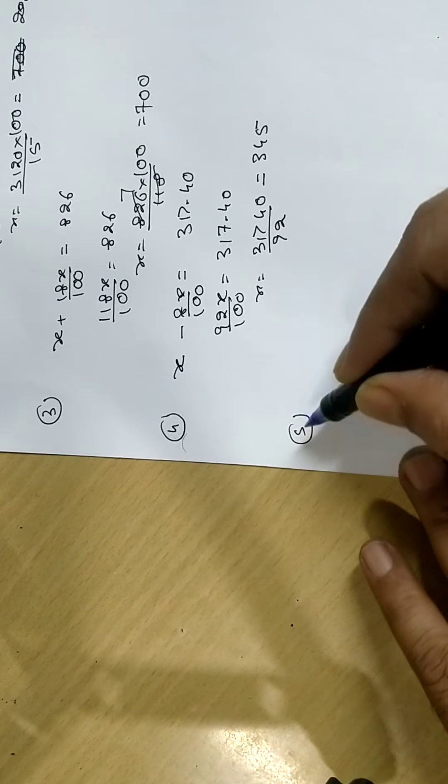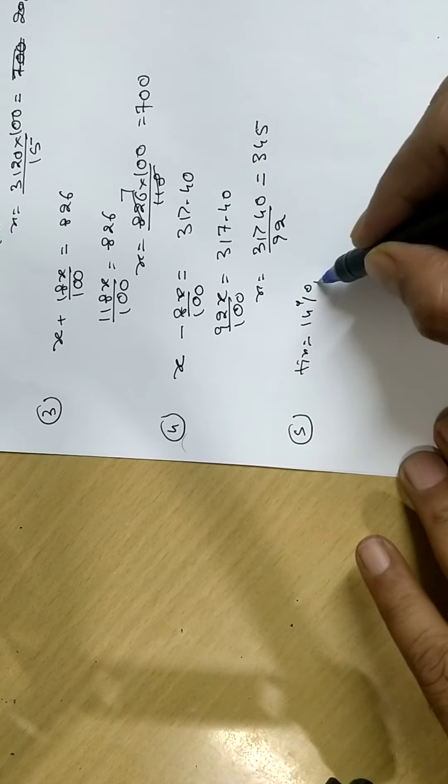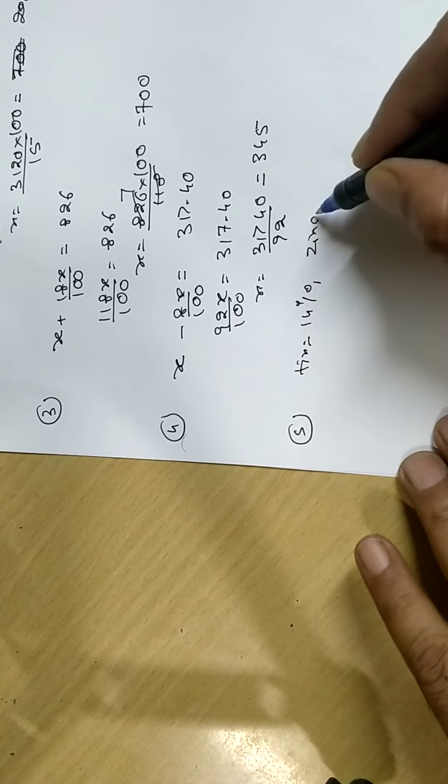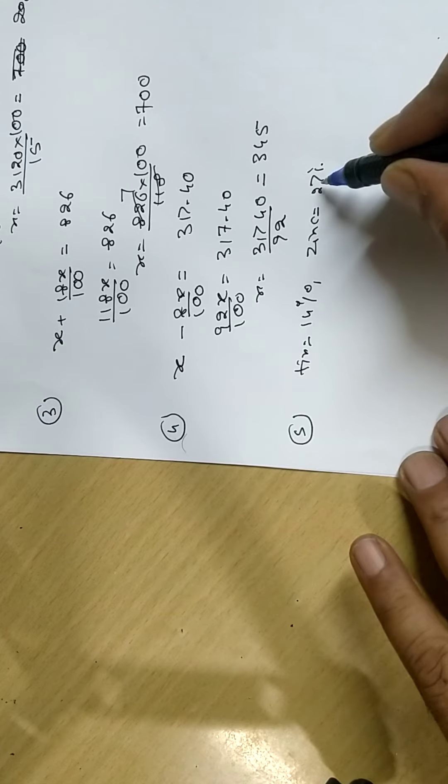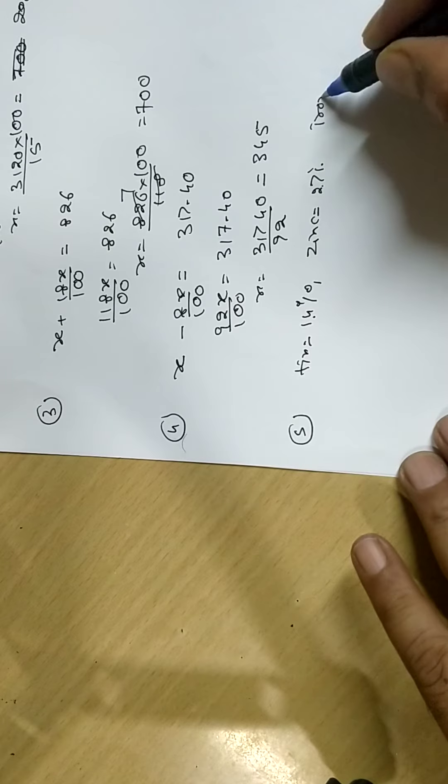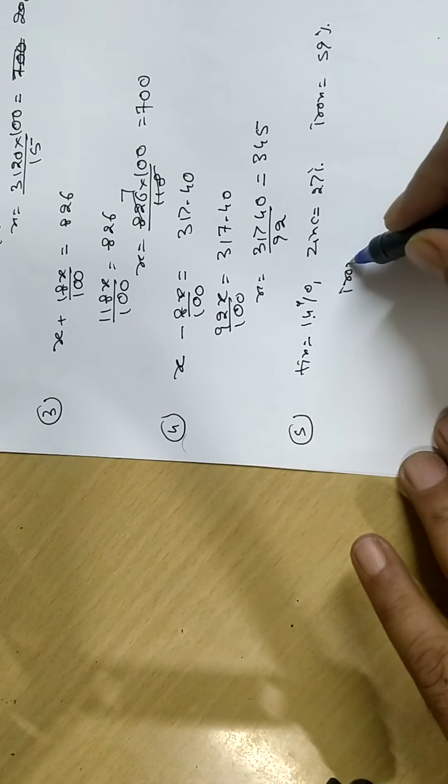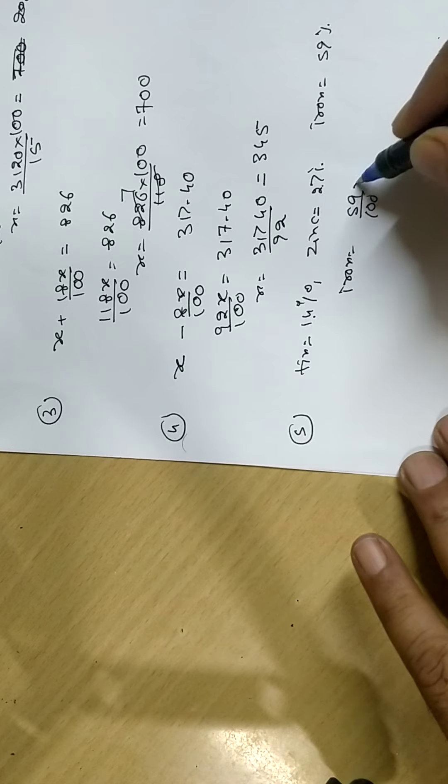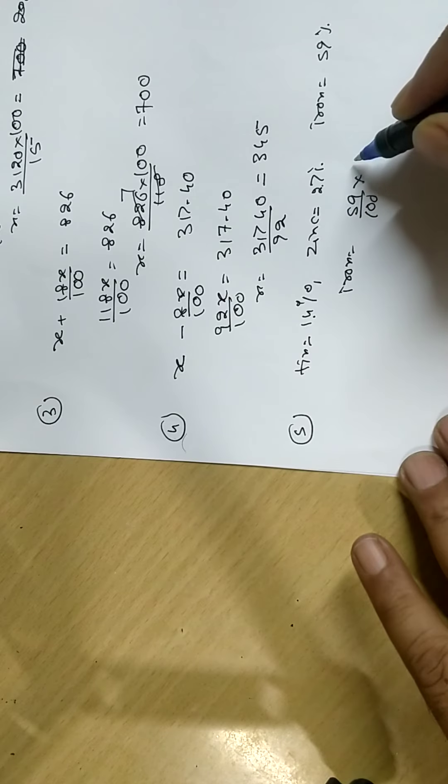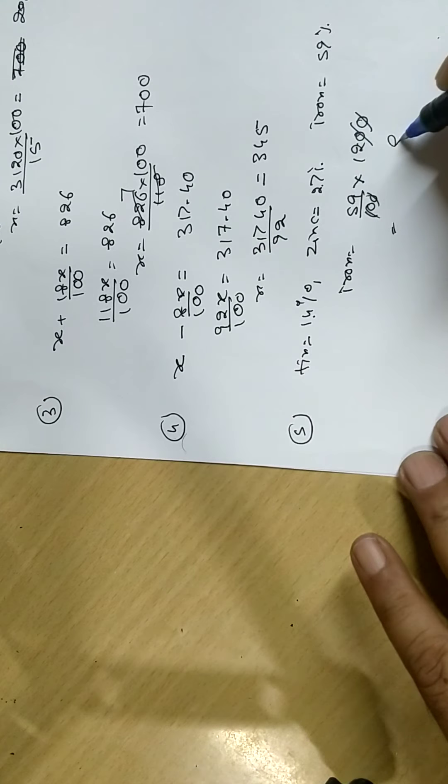Fifth sum. An alloy: tin is 14%, zinc is 27%. 27 plus 14 is 41. So, left is iron, that is 59%. So, iron is how much? 59% of 1.2 kg means 1,200 grams. 59 times 12 is 708. 708 grams.